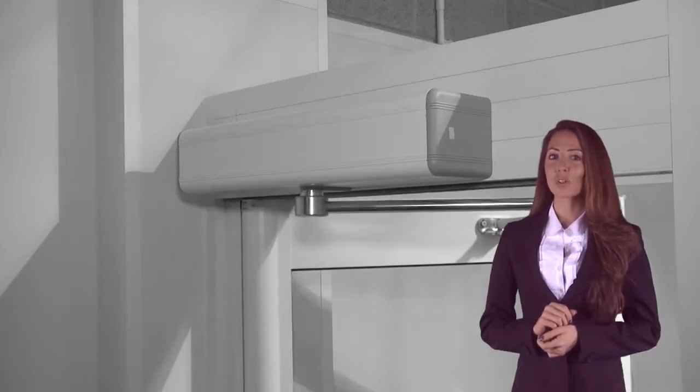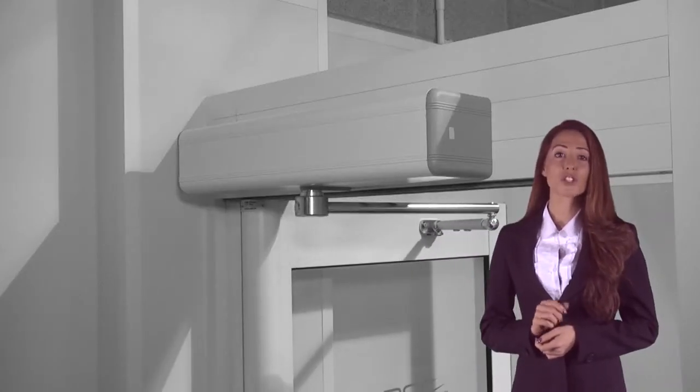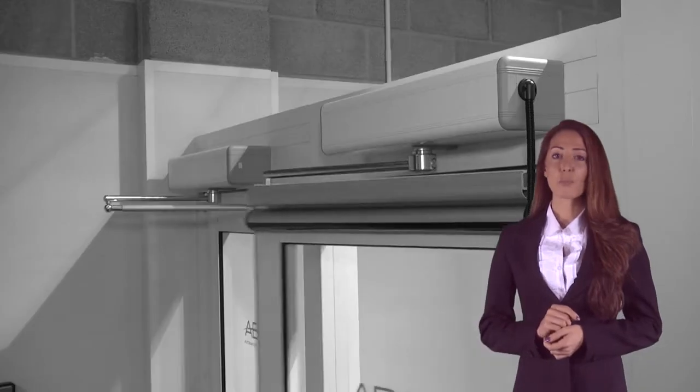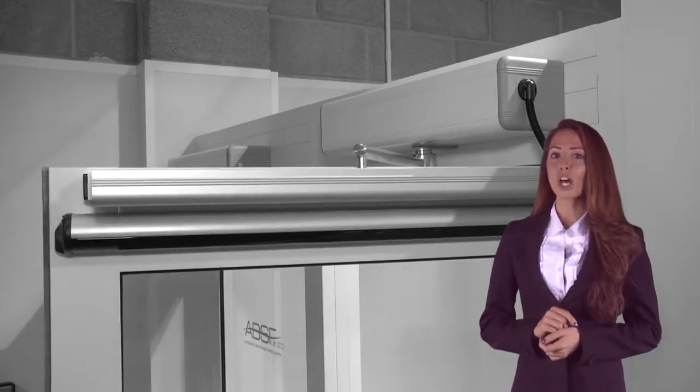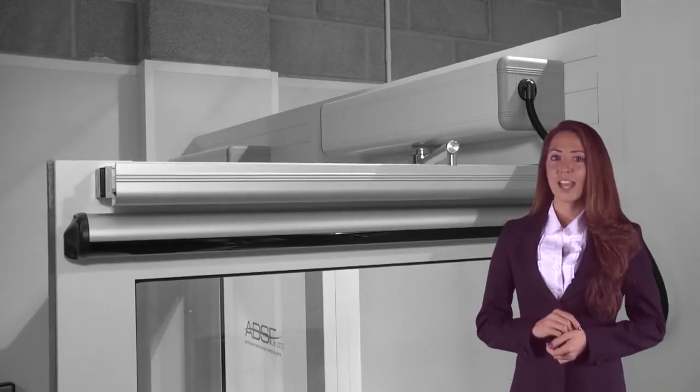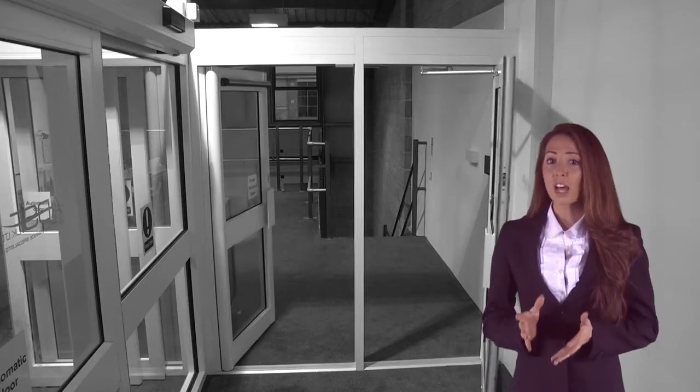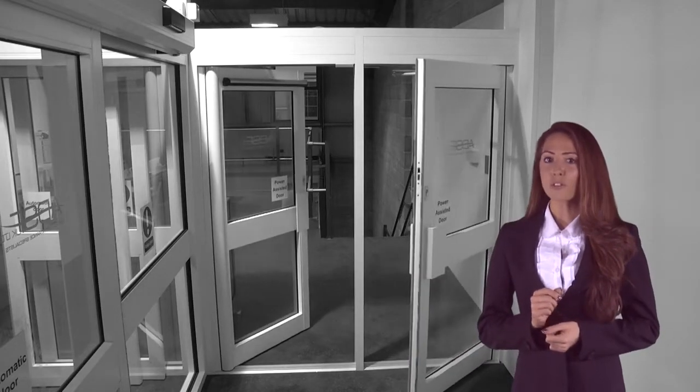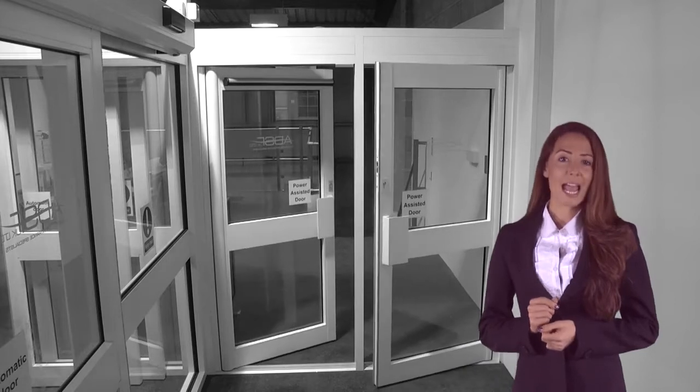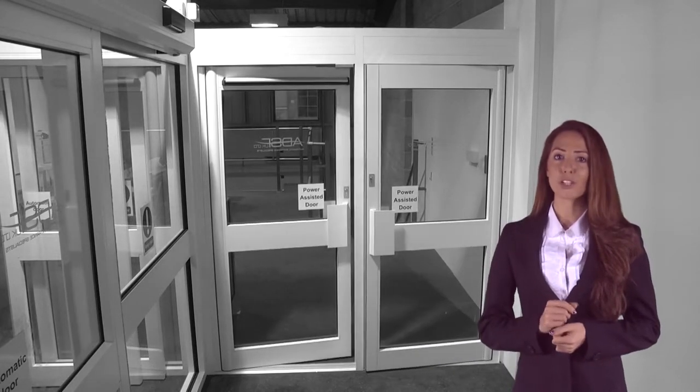The new Premise 120 will take door weights up to 120 kilos and the Premise 250 up to 250 kilos. They can be mounted on either side of the door and adapt to any environment, such as disabled access or areas of heavy traffic.